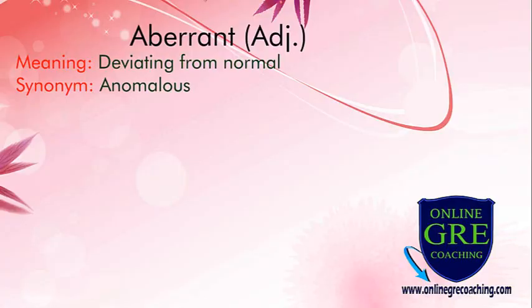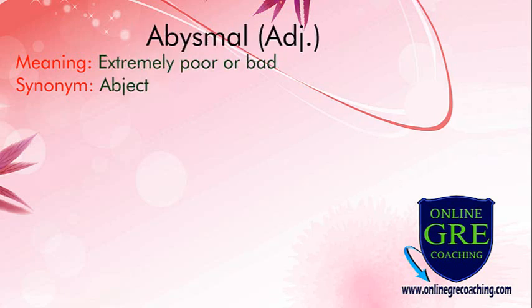First word is aberrant, means deviating from normal. Synonym is anomalous. Another word is abysmal, means extremely poor or bad. Synonym is abject.